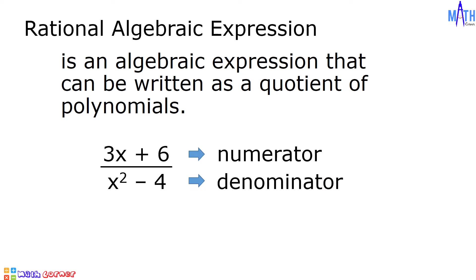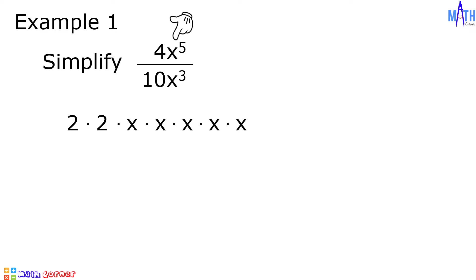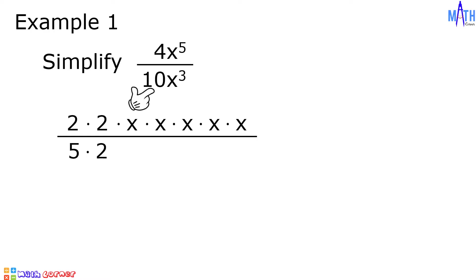Let us begin simplifying rational expressions. Example number 1: let us simplify 4x raised to 5 over 10x cubed. To simplify this, let us use prime factorization. In the numerator, 4 is equal to 2 times 2, and x raised to 5 is equal to x times x times x times x times x. In the denominator, 10 is equal to 5 times 2, and x cubed is equal to x times x times x.